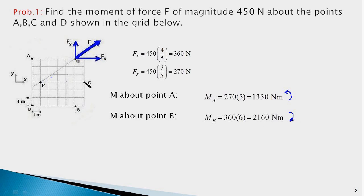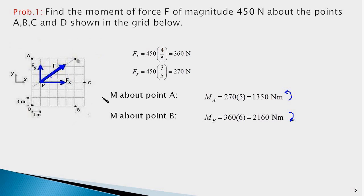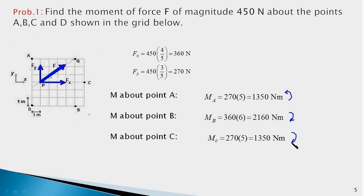To determine the moment about point C, we shift the point of application to point P so that the horizontal component passes through C. Fx will cause no moment about C, and Fy the vertical component will have a clockwise moment about C with a moment arm of 5 meters. Therefore the magnitude of the moment about C equals 270 times 5, which is 1350 newton-meters clockwise. To determine the moment about point D, we sum the moments of both components: Fx causes a clockwise moment and Fy causes an anti-clockwise moment. The moment arm for Fy is 1 meter and for Fx is 3 meters.